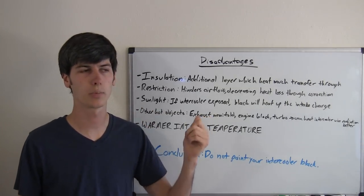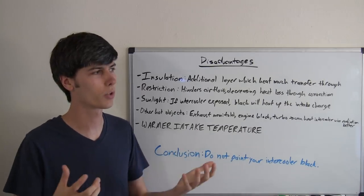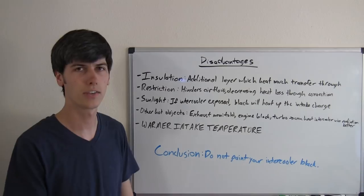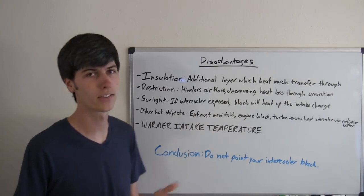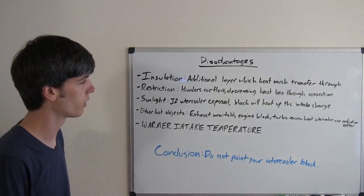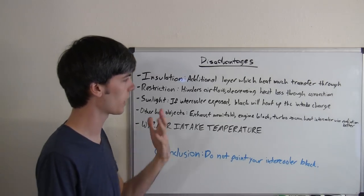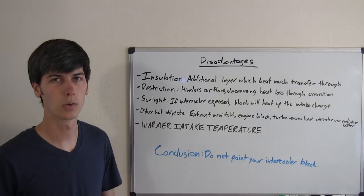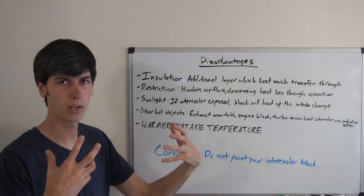Sunlight. If this intercooler is exposed, which you'll see a lot of turbocharged cars, they'll rip off the front bumper, put a big fat intercooler out there in the sun, and that's fine. But if it's black, it's going to heat up a lot more than if it was aluminum. Aluminum is actually going to reflect a lot of that heat, whereas the black intercooler, which is almost a black body, is going to absorb nearly all of that heat.